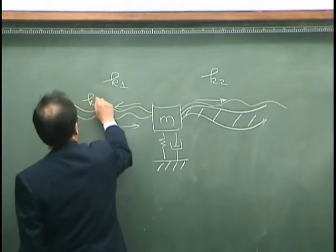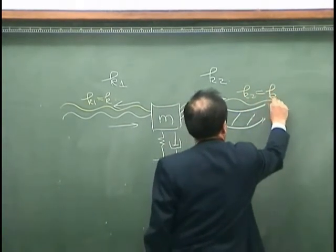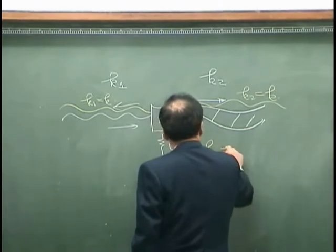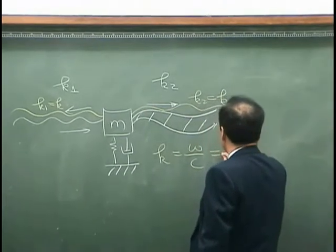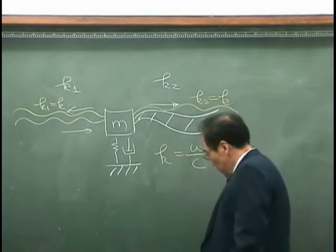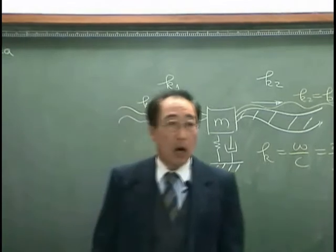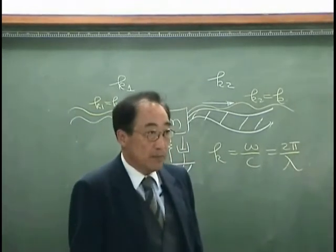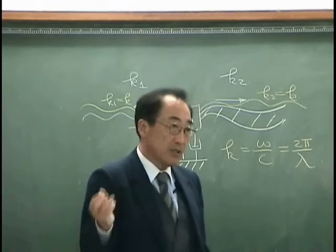But if this one is the same, then we will have the same k. k1 is k, and k2 is k. Because k, wave number, is omega over c, that essentially determines how many waves per unit length is allowed in the medium. And that is totally determined by the characteristics of medium.